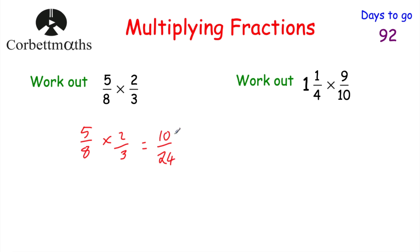If you have a look here, the numerator and the denominator are both even, so we can actually cancel this fraction down. Dividing both of these by 2 would give us 5 twelfths. So just make sure whenever you're multiplying fractions that you check and see if you can cancel down at the end. So 5 eighths multiplied by 2 thirds would be equal to 5 twelfths. And that's it.